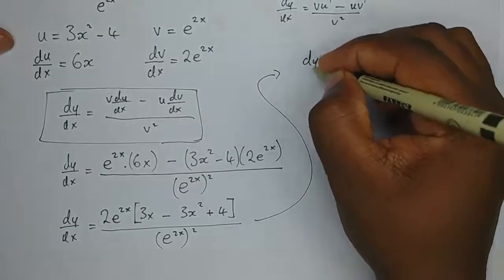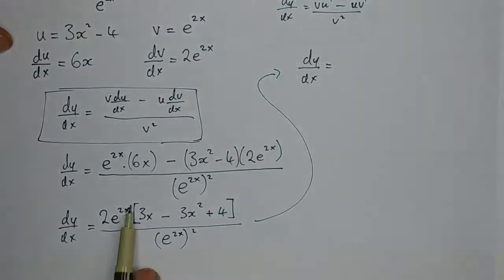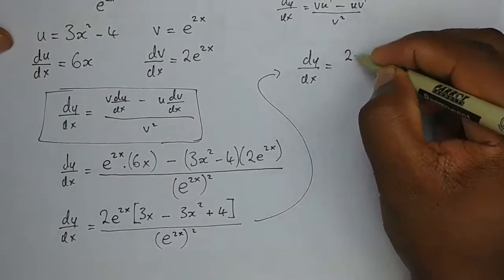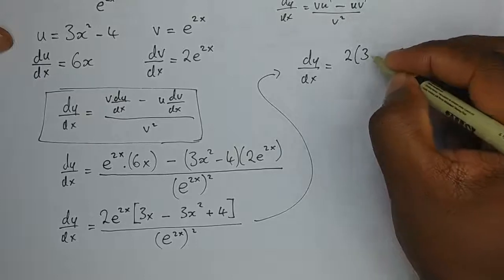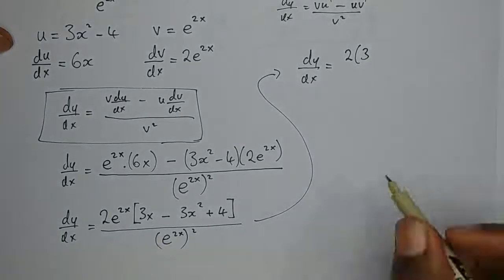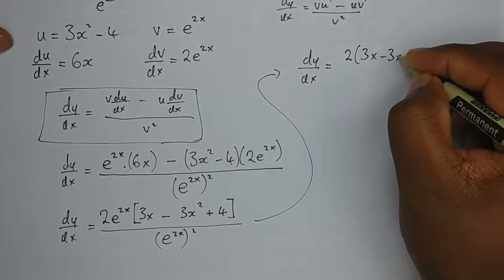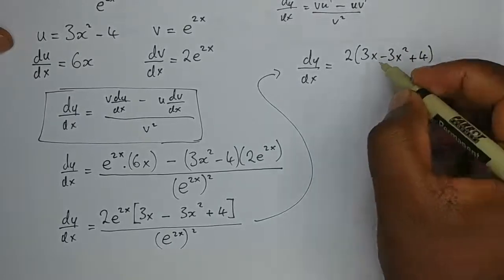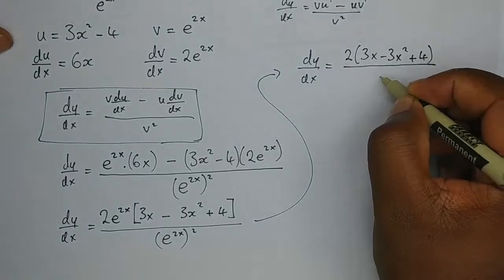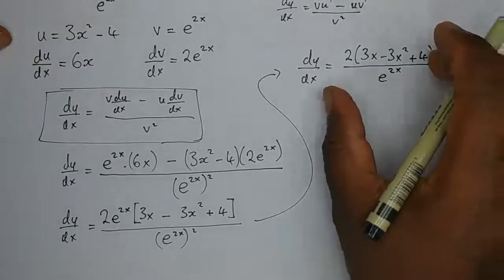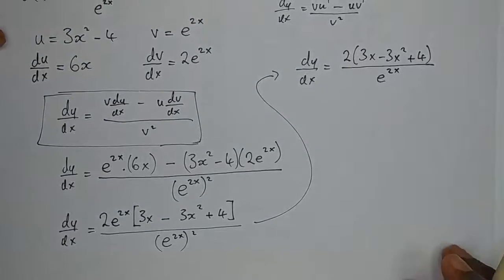Now we can cancel out e to the power 2x from the numerator and denominator, so our dy/dx equals 2 times the bracket 3x squared plus 4, divided by e to the power 2x. We can leave that as our final answer. Let's look at one more example — this time involving trigonometric ratios.